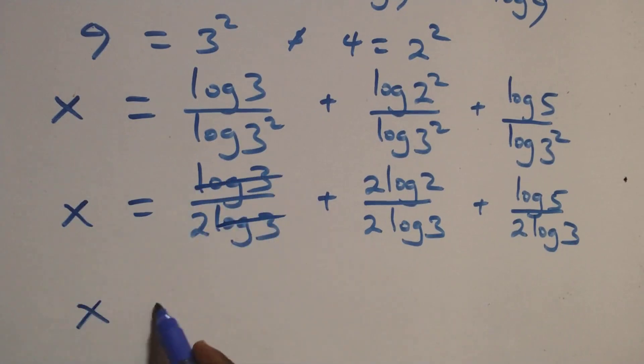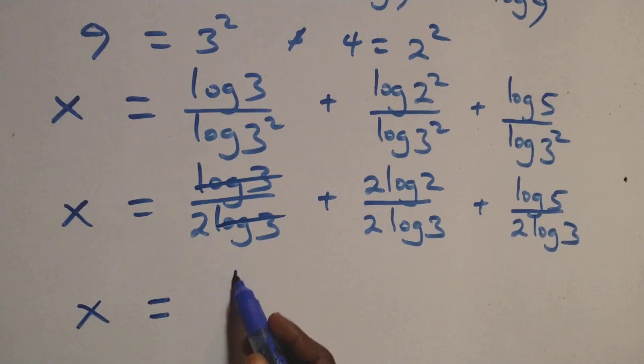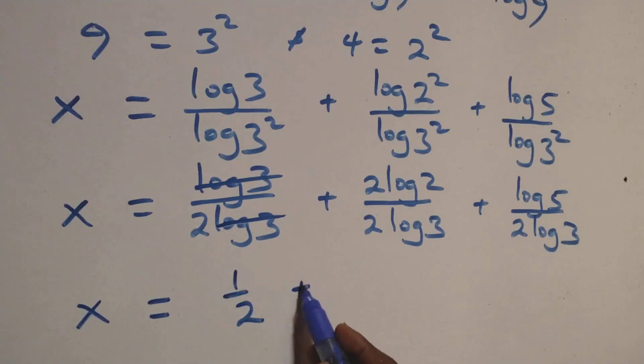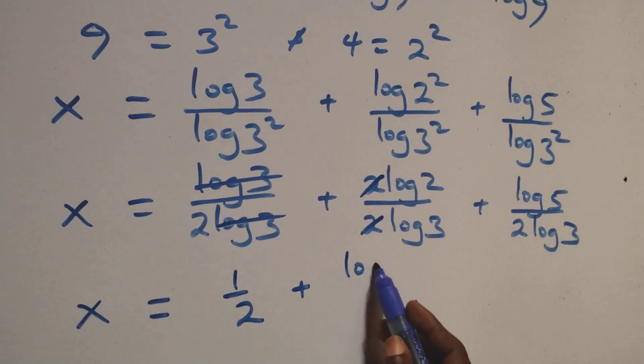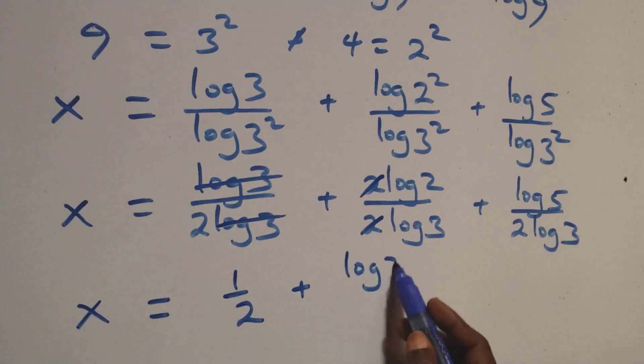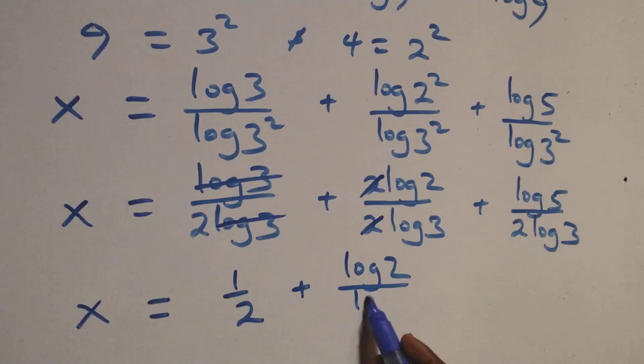Here log(3) cancels in the first term, giving 1/2. In the second term the 2s cancel, leaving log(2)/log(3). So x = 1/2 + log(2)/log(3) + log(5)/(2·log(3)).